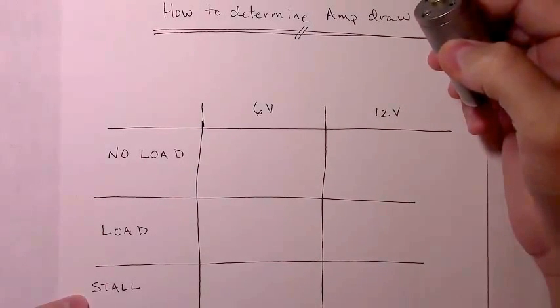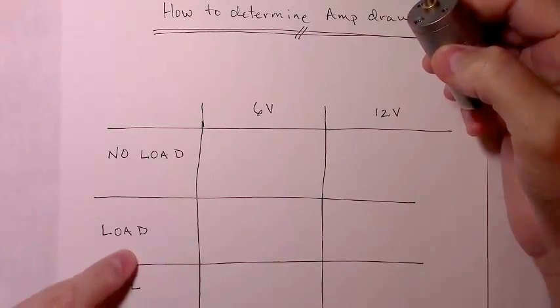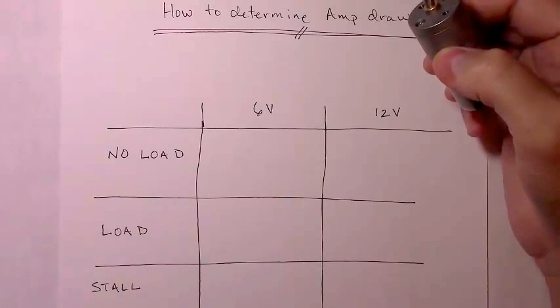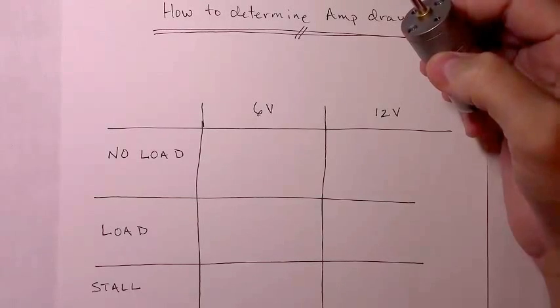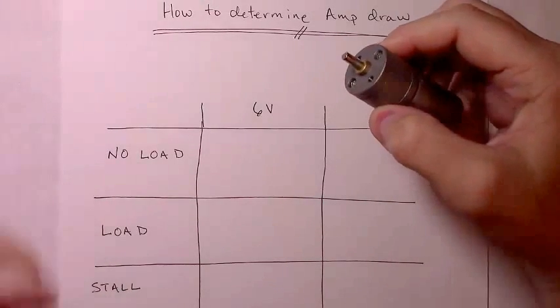And most importantly, how to determine the amp draw when it's stalled. This factor is often extremely important when you think in terms of building a robot that rolls up to a wall and then can't go forward and its wheels lock up.